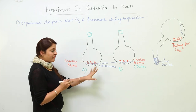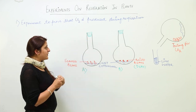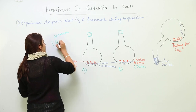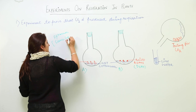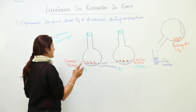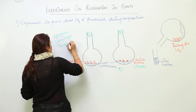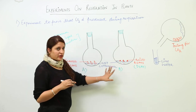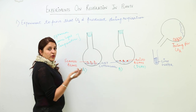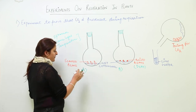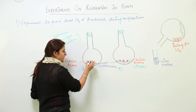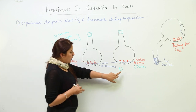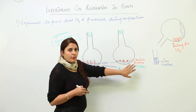After a few days, we observe the flasks, which are kept under optimum conditions — both receiving the same intensity of light and kept at the same temperature. After a few days, we observe that in flask A, the seeds are actually germinating and starting to grow, while flask B contains the dead or boiled beans.